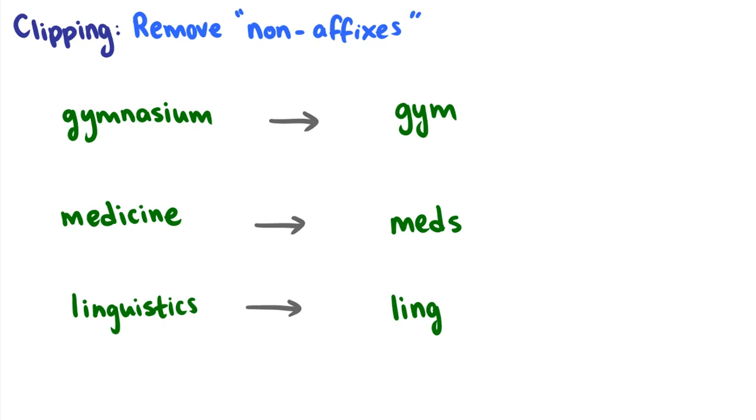The second way we can create words is a process called clipping. And this is removing non-affixes. So this is just removing the ends of words where we don't think that they have any sort of typical affix status. It's not like an ending like ed or ing that is uniform. For instance, taking the word gymnasium to the word gym, nasium isn't an affix. It's not something that attaches to other words to make new words, but we remove the letters and we're left with gym.